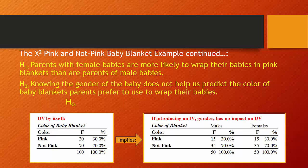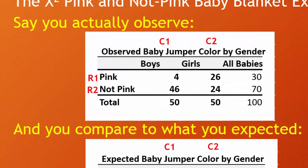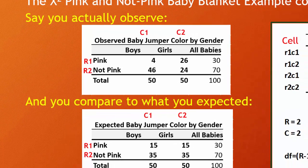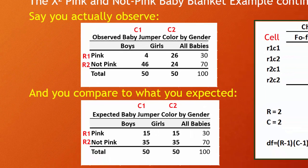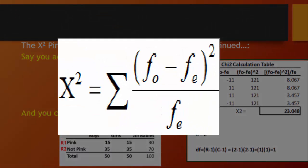Say we actually observe that 46 boys were not wearing pink blankets, but 26 girls were wearing pink and 24 were not wearing pink. We compare that to what we expected and set up a calculation table based on the chi-square statistic. The chi-square statistic is the sum of the frequency observed minus the frequency expected, squared, then divided by the frequency expected.